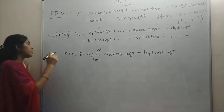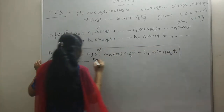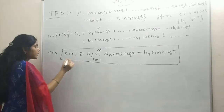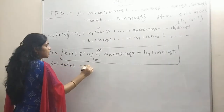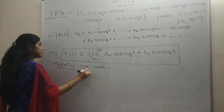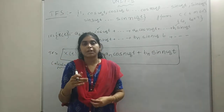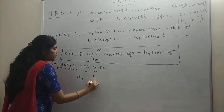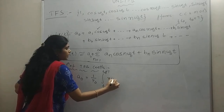This is the standard trigonometric Fourier series representation of x(t) — any continuous time signal. Now, the calculation of coefficients is important. The formula for a₀ is: a₀ = (1/T₀) × integral from t₀ to t₀+T of x(t) dt. These formulas you have to remember, because for a given signal x(t) you substitute here to find a₀.